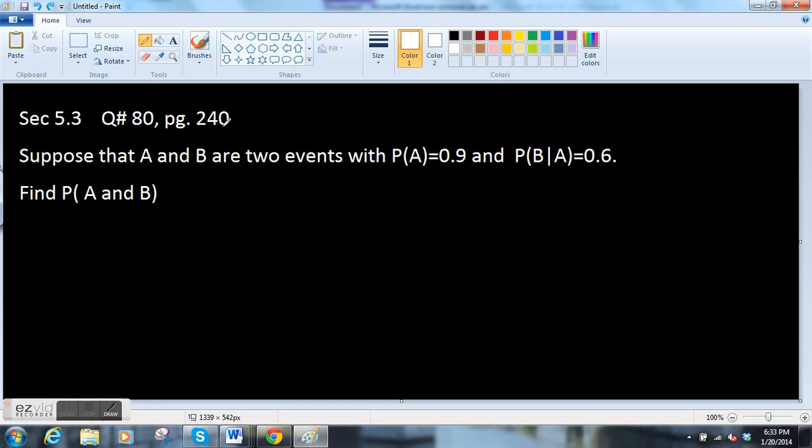Hi there. Section 5.3 again. This is question 80 on page 240. The problem reads, suppose that A and B are two events with probability of A equals 0.9 and probability of B given A equals 0.6. Find probability of A and B.